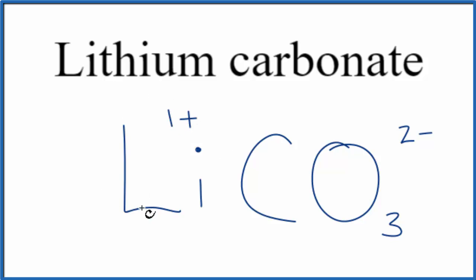So we have our lithium 1 plus and our carbonate 2 minus. To get this all to add up to 0, to have a net charge of 0, we could just put a 2 here. So now we have two lithium atoms. 2 times 1 plus, that's 2 plus. That will balance out the 2 minus.